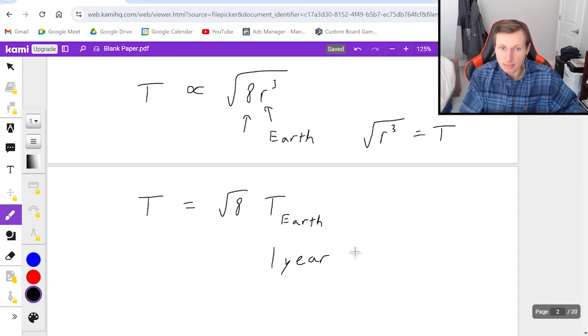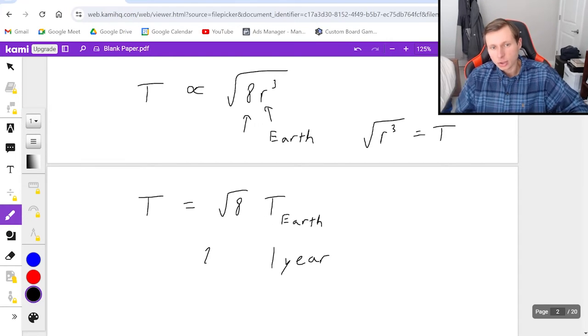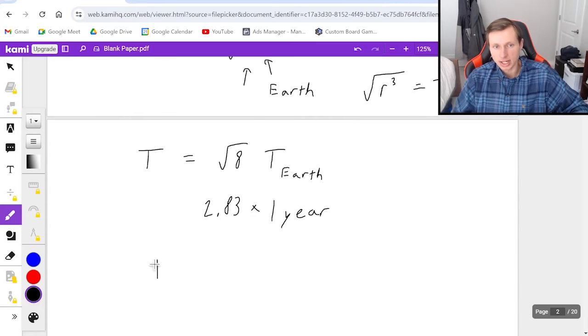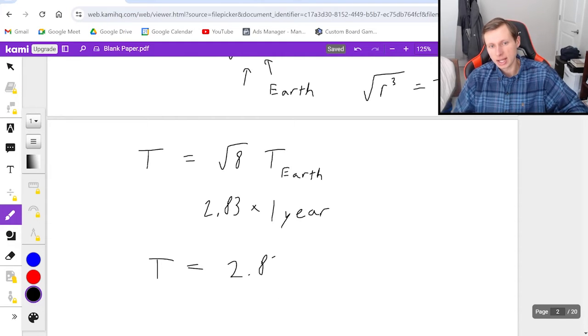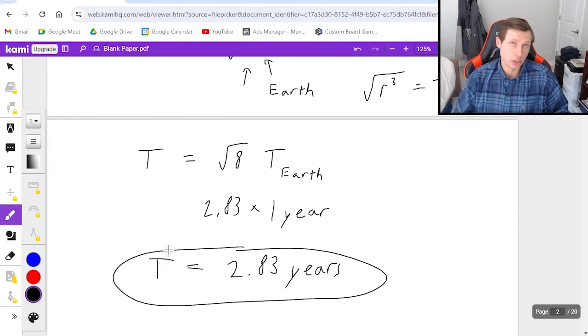So if I plug in square root of 8 in my calculator, I get 2.83. And so if I want to know the period of this planet that's twice as far away from the sun as the Earth is, we know it's going to be 2.83 years. That's how long their orbit is in terms of Earth years.